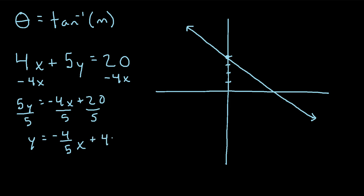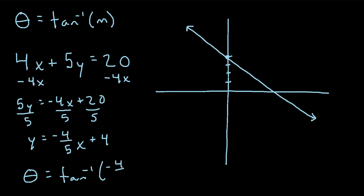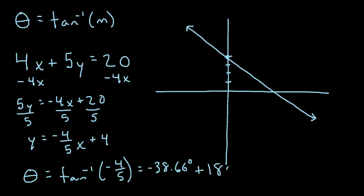We can see it's in y equals mx plus b format, where m, the slope, is negative 4/5. To find the angle of inclination, we plug that into the formula and take the inverse tangent of negative 4/5. When you punch that into a calculator, you get negative 38.66 degrees. The angle of inclination must always be between 0 degrees and 180 degrees, so if you get a negative number, add 180 degrees. Doing negative 38.66 plus 180 gives us 141.34 degrees.